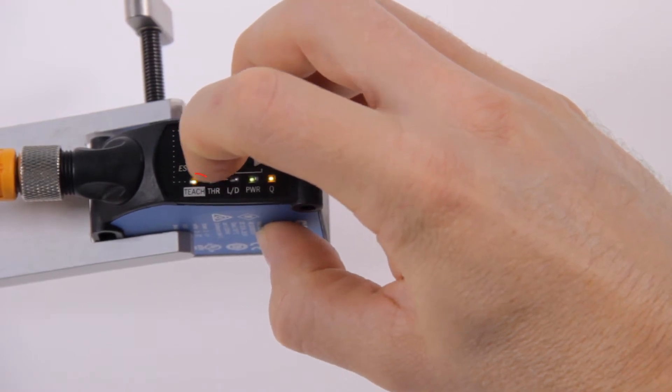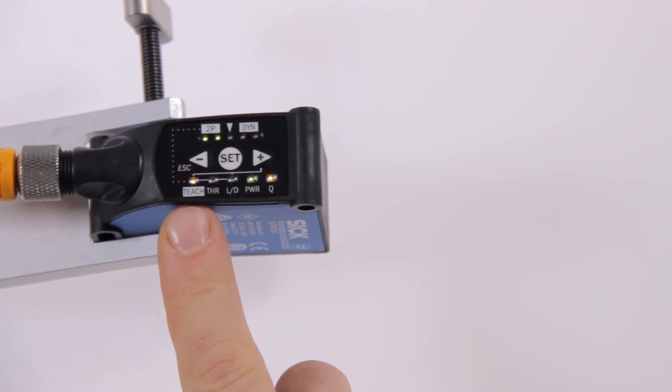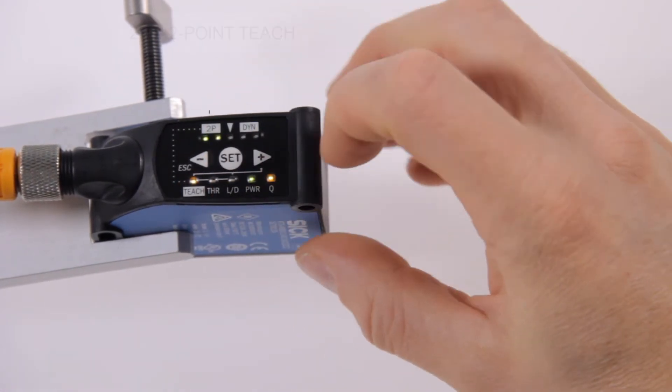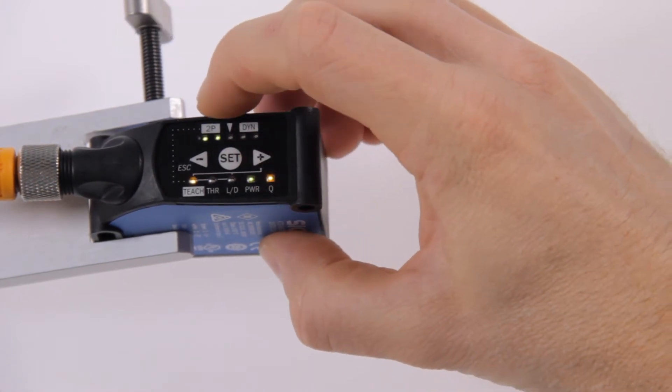The yellow LED indicates the current function. Confirm with SET. Use the plus and minus buttons to navigate to 2P which is the two-point teach and confirm with SET again.